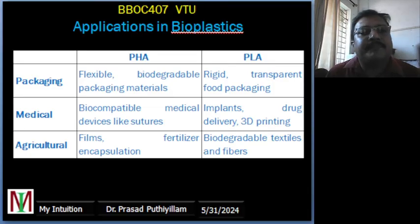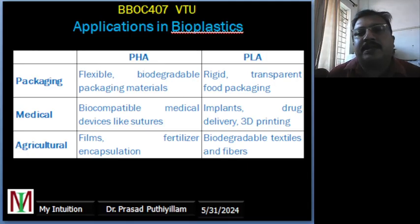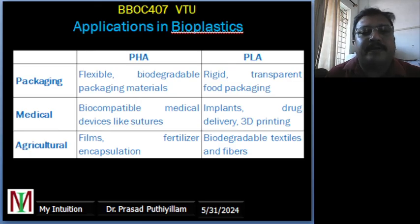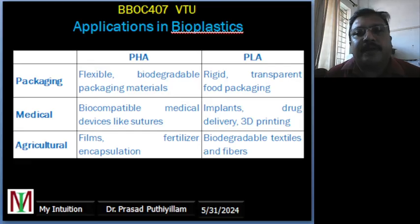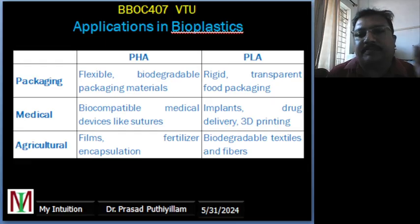Applications of PLA: PLA finds use mainly in packaging — due to its rigidity and transparency, it is used to manufacture clear salad containers and other food packaging materials that are both sturdy and compostable. In the medical field, PLA is applied in 3D printing for custom medical implants, where its biocompatibility and biodegradability are crucial. Furthermore, PLA is used in textiles and fibres to create biodegradable clothing, offering an eco-friendly alternative to traditional synthetic fibres. For example, PLA fibres are used in making biodegradable t-shirts, contributing to sustainable fashion.